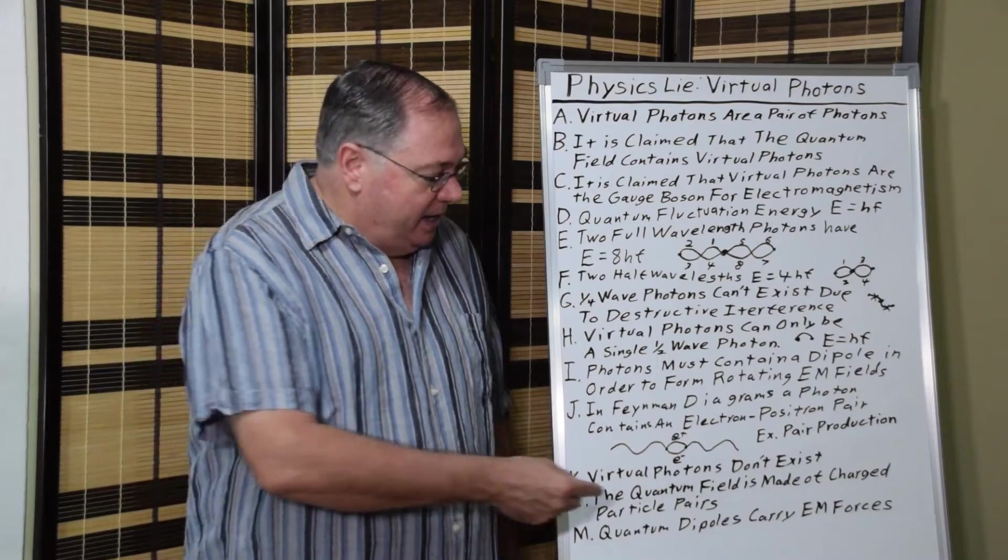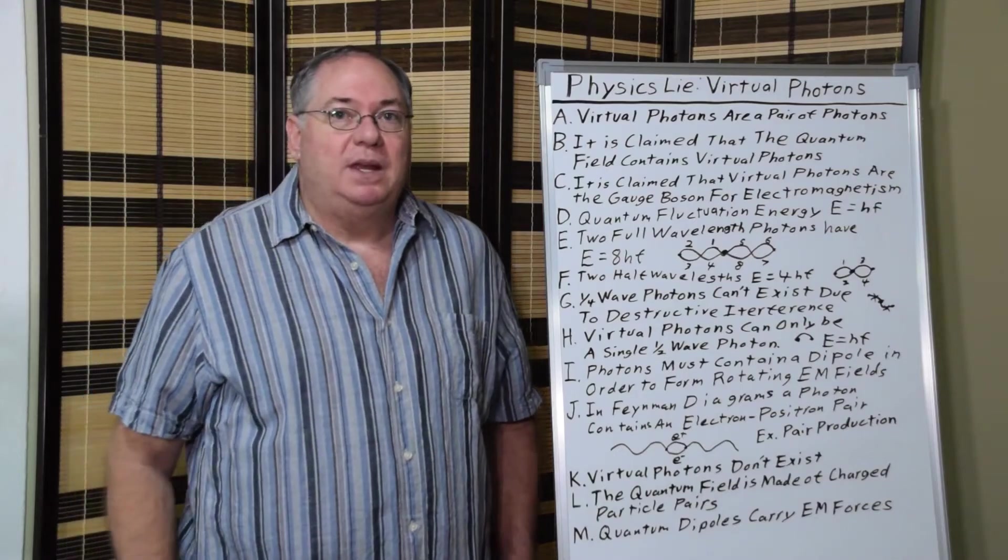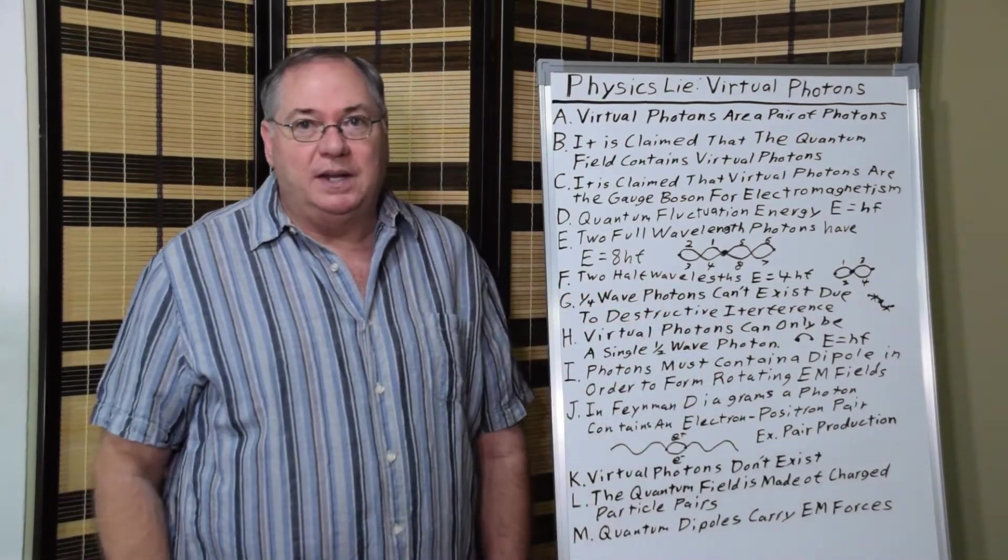But in reality, it should just be a series of electron-positron pairs that are counter-rotated. And then we can describe the photon as a composite particle.